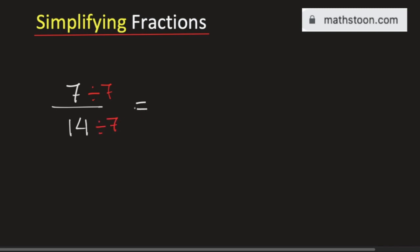And by doing so, we will get 1 in the numerator and 2 in the denominator. Now, see that we cannot simplify 1 divided by 2 further. So, 1 divided by 2 is the simplified reduced form of 7 divided by 14, and this is our final answer.